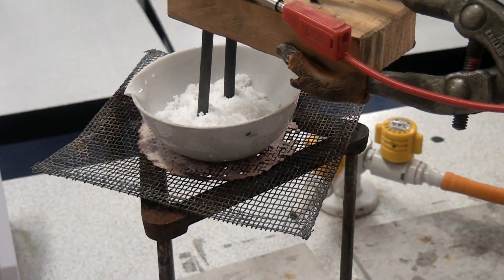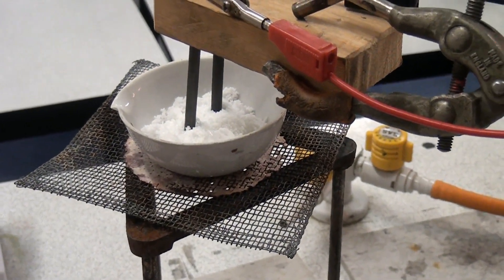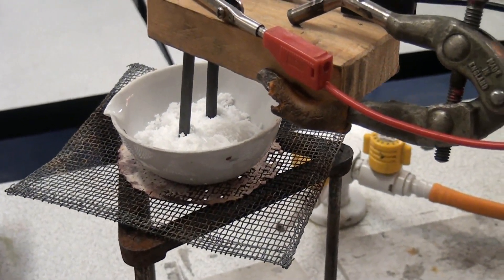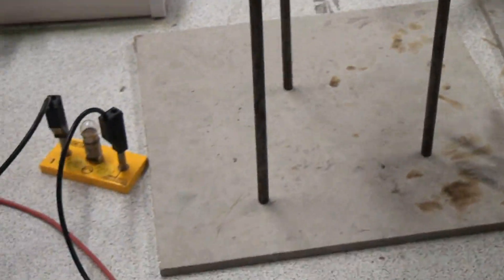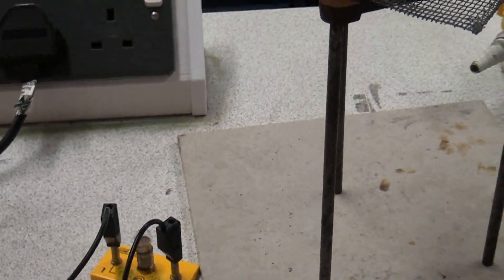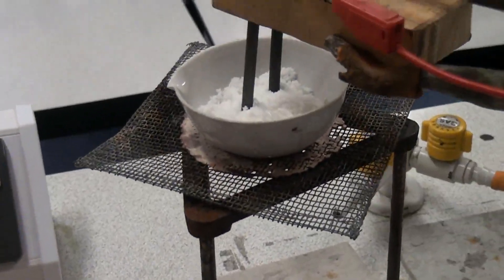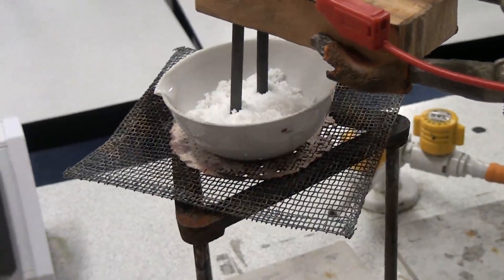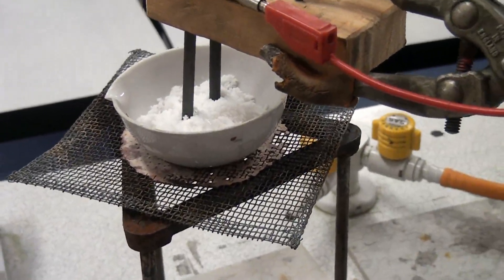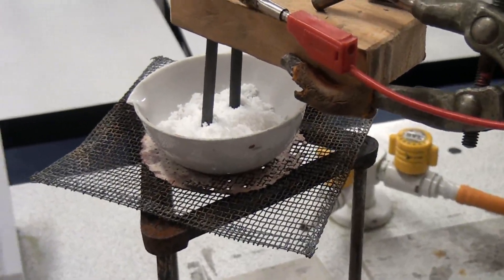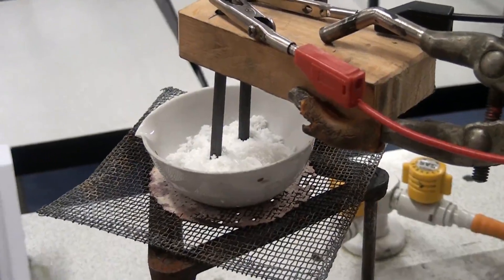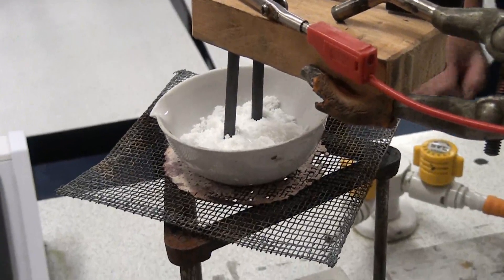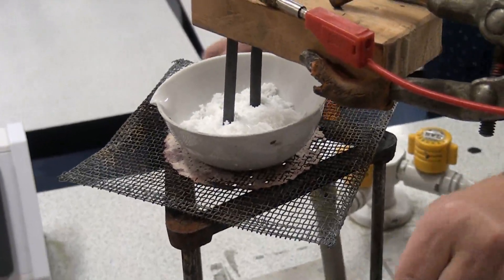So here we can see the solid zinc chloride in the dish and the two carbon electrodes sticking into it. And we can see at the moment that there's no electricity flowing through the circuit because solid ionic compounds can't conduct electricity because the ions aren't free to move. If you're not sure about that, click the link at the top to go back to properties of ionic compounds to refresh your memory. So we're going to start heating it up and we'll come back in a few minutes when it's molten.